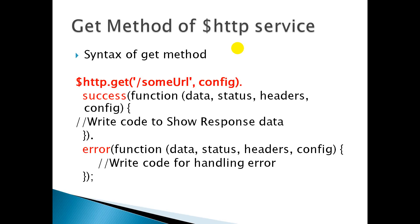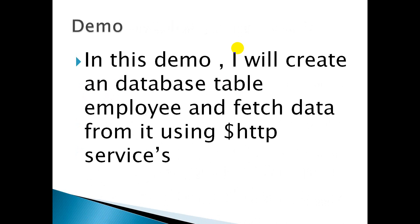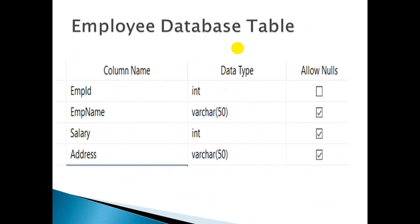If you are getting any kind of error — for example, if you have written a wrong URL — you will get an error. In this demo, I'm going to use an employee table, and using HTTP services I will fetch the data from that employee table. The structure of my table has four fields: Employee ID, Employee Name, Salary, and Address.